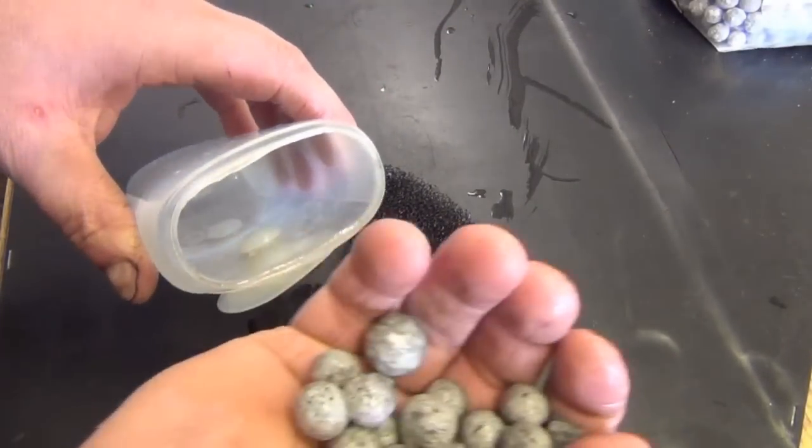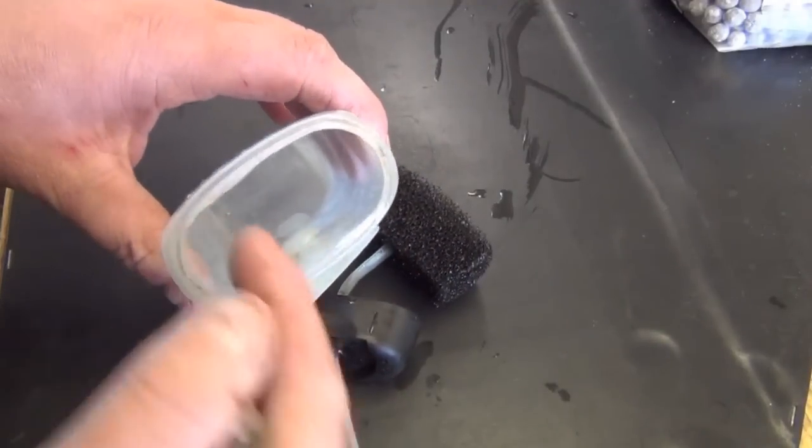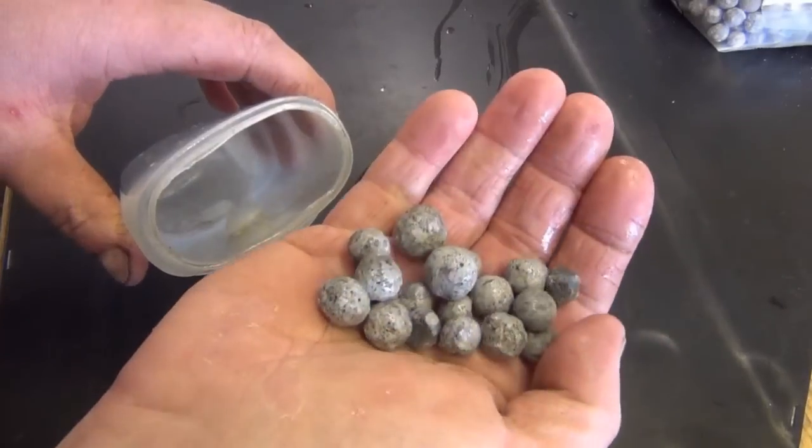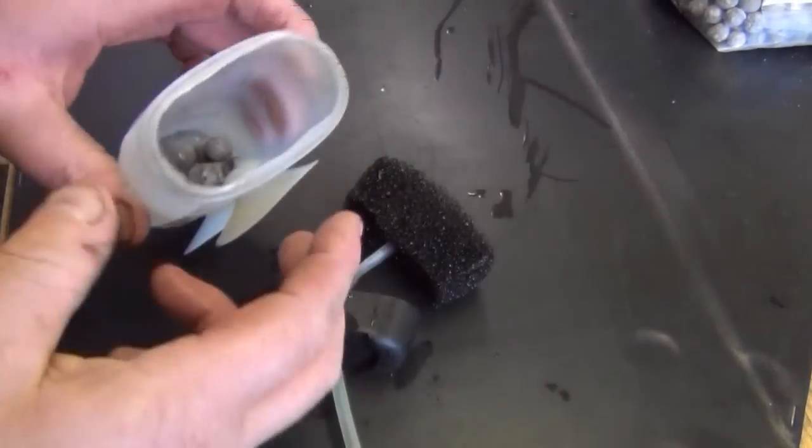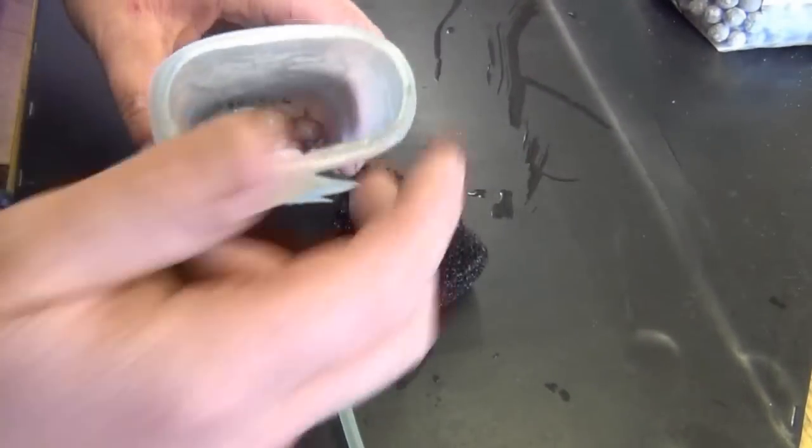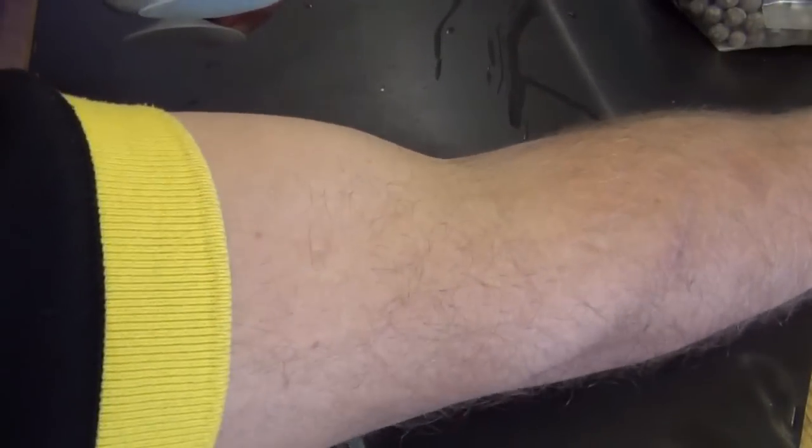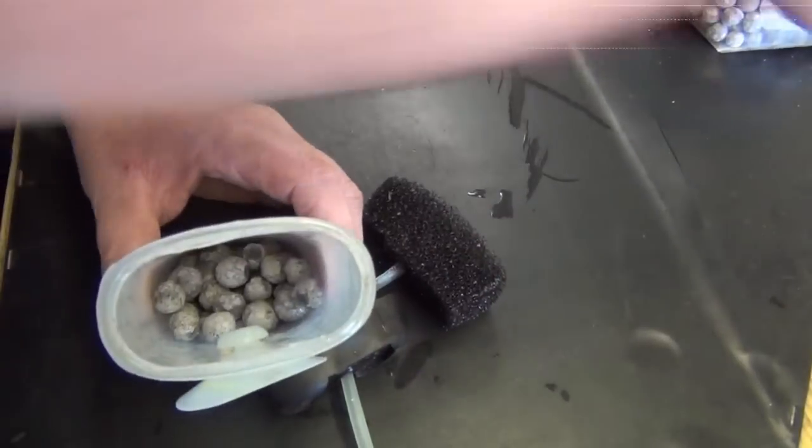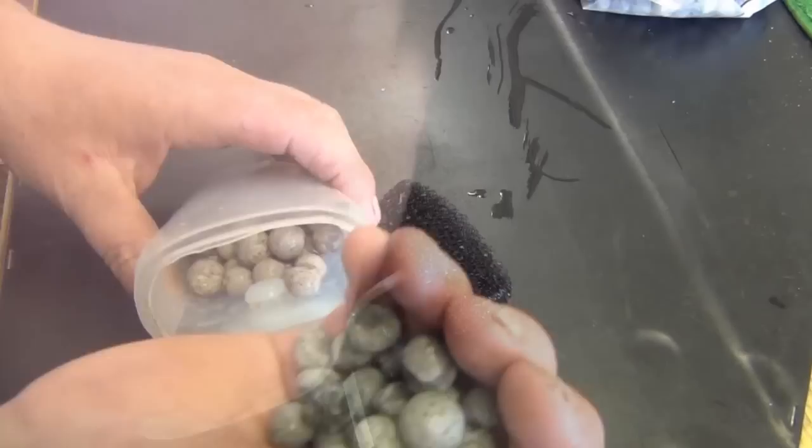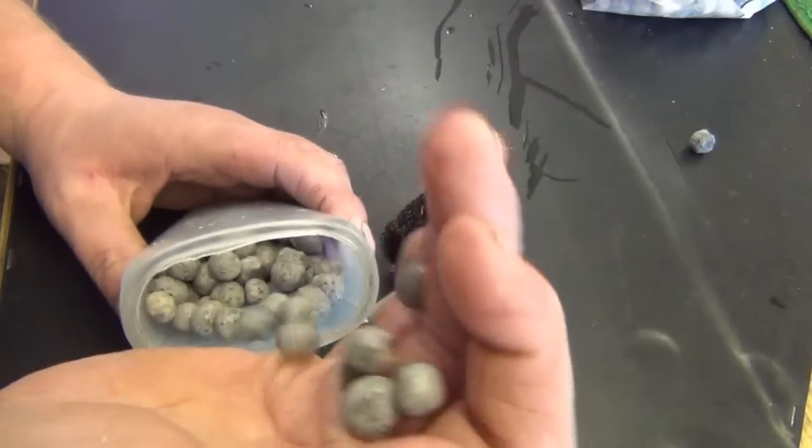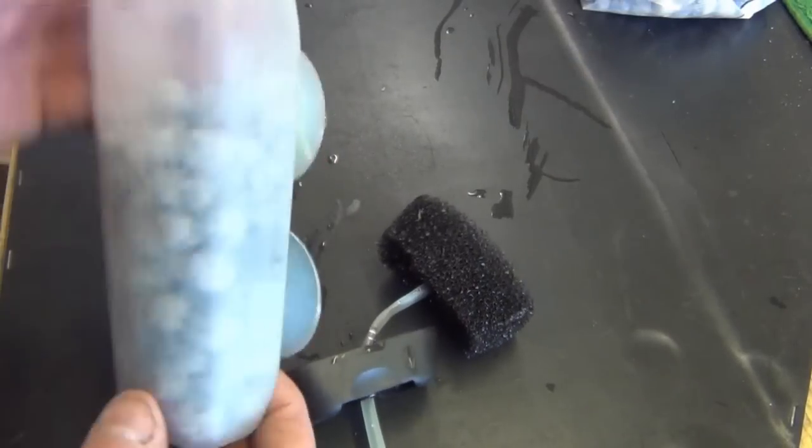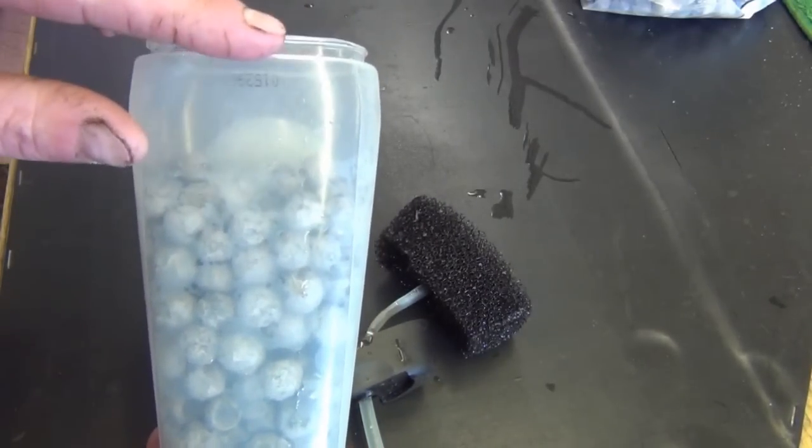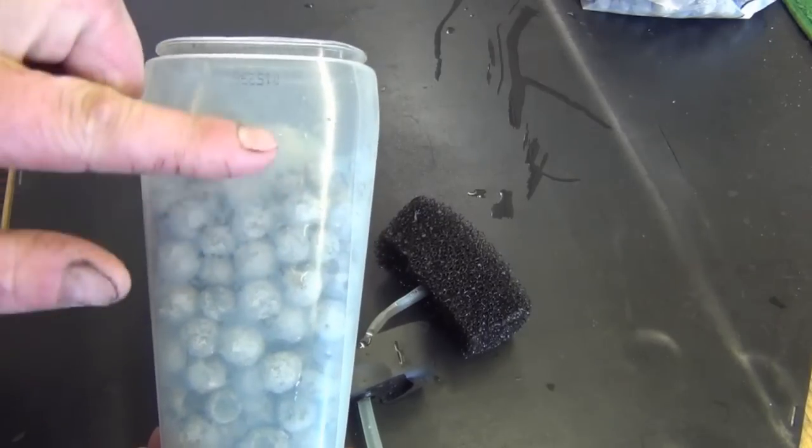And the next thing you do is fill in here with about 60 to 70% of media. Stuff I'm using is called Biomotion. It's a ceramic media, has a massive surface area. You can see how much media is in there. That's allowing enough room for the foam and also a little bit spare.